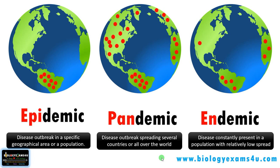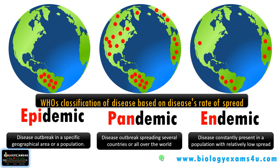Hi friends, hope you're fine. Today let us understand three confusing terms: epidemic, pandemic, and endemic — within three to five minutes. WHO classified diseases as epidemic, pandemic, or endemic based on the disease's rate of spread. Remember, it's not based on the severity of a disease.